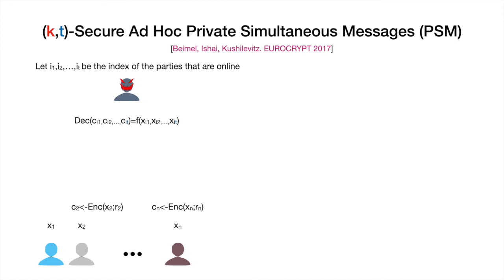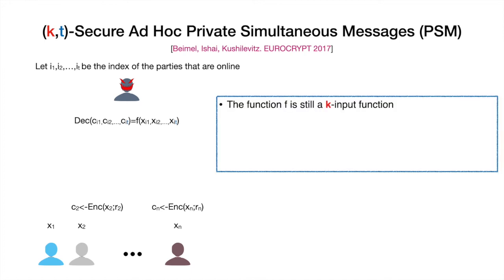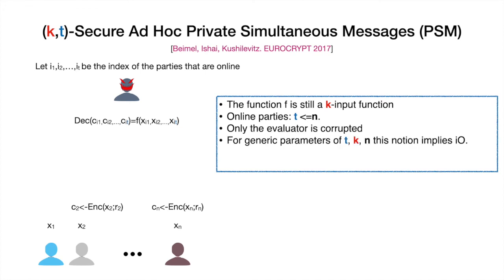As a second contribution of this work, we consider the notion of KT-secure ad hoc private simultaneous message. This notion doesn't allow corruption of parties other than the evaluator, but has the natural relaxation that the number of parties that could be online is not fixed. In the previous model we had n parties and only a subset of k parties participating in the online phase; whereas in this notion, any subset of size T can participate. Unfortunately, for generic parameters of T, K, and N, this notion implies indistinguishability obfuscation.